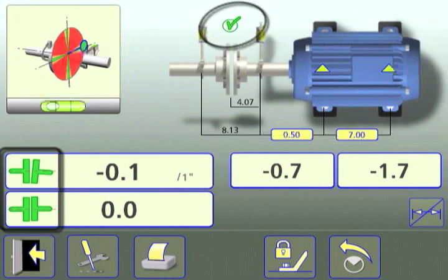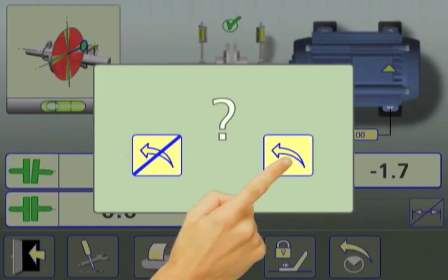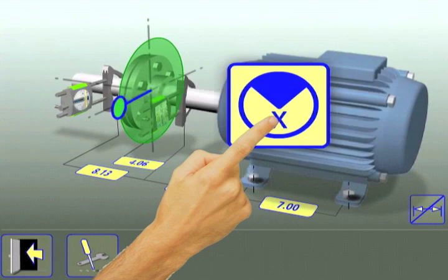Now the bolts can be re-tightened. Re-check the alignment by touching the re-measure icon and confirming the decision to re-measure. Rotate the sensors and touch the measurement icon to take the first measurement.